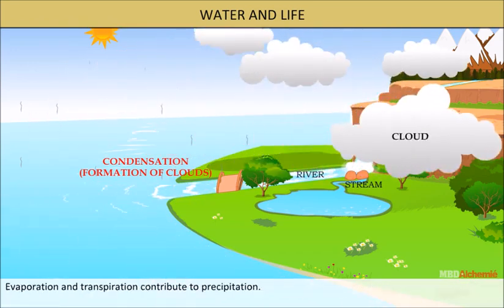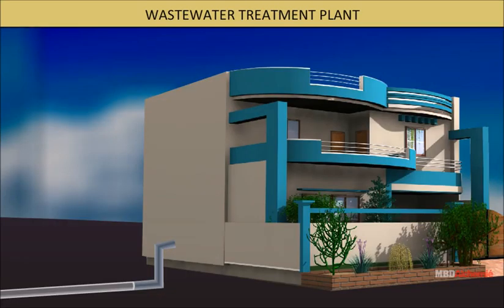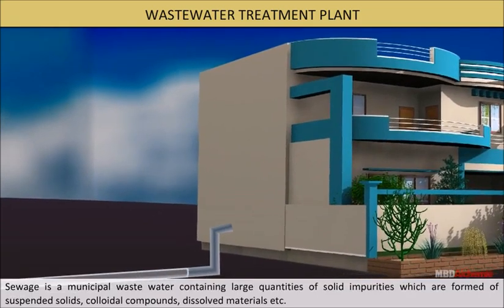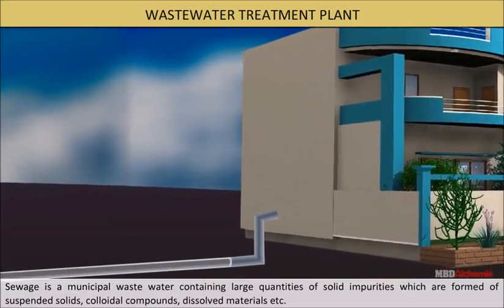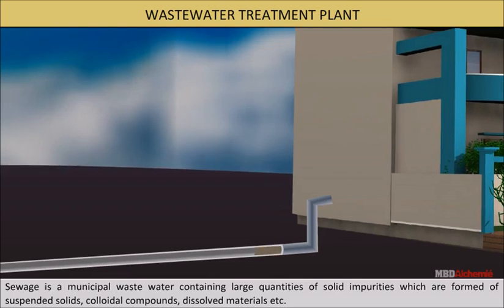Evaporation and transpiration contribute to precipitation. The graph here shows the distribution of water on the earth. Wastewater treatment plant: sewage is the municipal wastewater containing large quantities of solid impurities, which are formed of suspended solids, colloidal compounds, and dissolved materials.